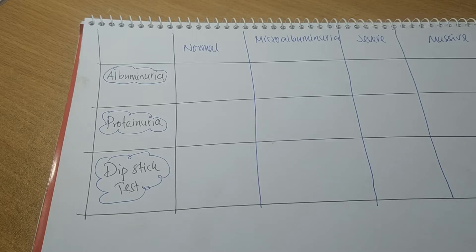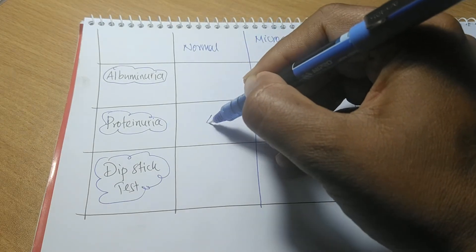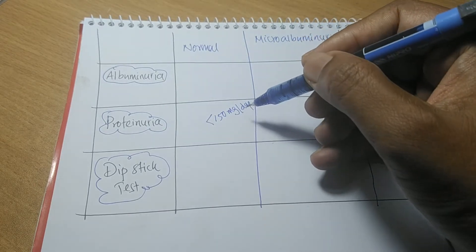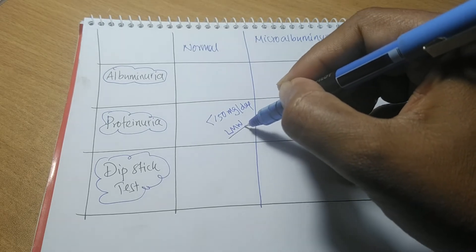Albumin can only pass through the glomerular membrane and cannot be reabsorbed by the renal tubules. On the other hand, low molecular weight protein passes through the glomerular basement membrane and can be completely reabsorbed through the renal tubular cells. The renal tubular cells can also secrete some low molecular weight protein that passes into the urine. Normally, our urine has protein less than 150 mg per day, and the maximum of this is low molecular weight protein, which is tubular in origin.